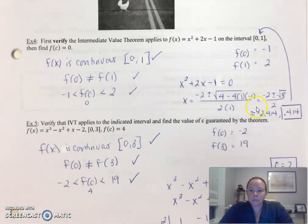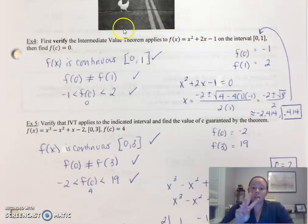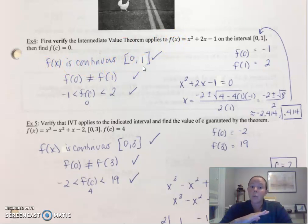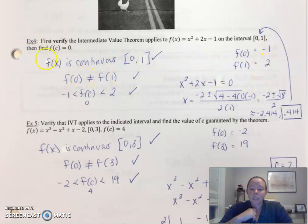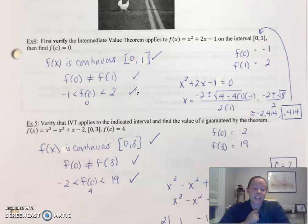These are two examples of using the verification of the intermediate value theorem. First, verify IVT applies for this function on the interval from zero to one — you need to show those three requirements and be very clear in your explanation. f of x is continuous on the closed interval — that's a polynomial function, we're good to go. f of zero does not equal f of one: plug these values into your function and verify — negative one and two. Our last step: is zero, that k value, between negative one and two? Yes — it met all three requirements. By the intermediate value theorem, we are now guaranteed an answer, and if you don't get an answer, you screwed something up because this theorem is going to work.